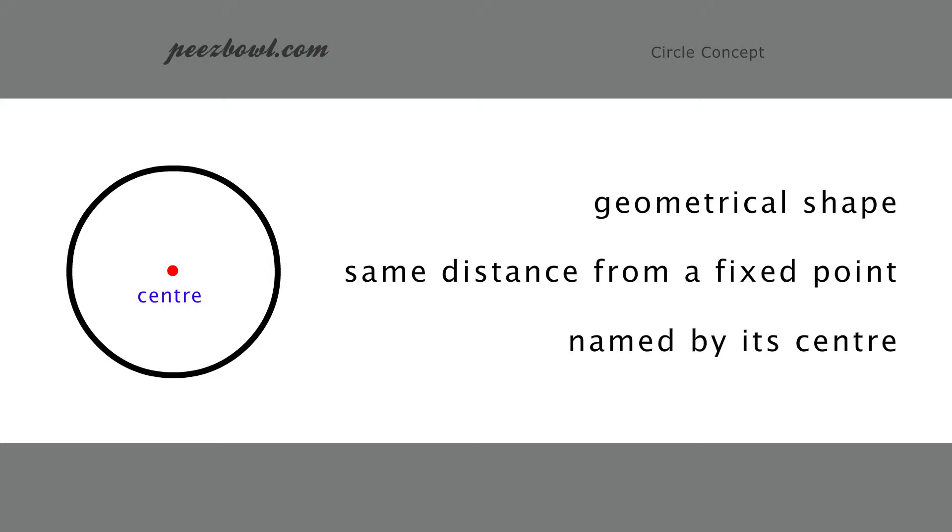A circle is named by its center. Thus, the circle on the left is called circle B, since its center is at the point B.